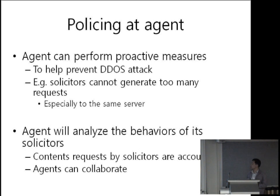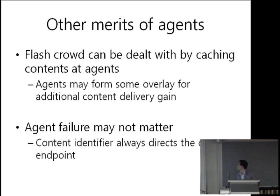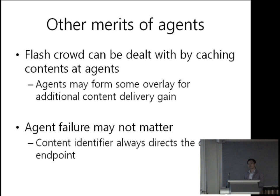Agents can also analyze the behaviors of solicitors much more easily, because end hosts or solicitors always specify the content identifier — so content requests are accountable. Agents can also collaborate if a DDoS attack is happening at a wide-area scale. There can be other merits of agents, like cache-and-forward networks — the agent can cache the content, so flash crowd phenomena can be easily handled. Additionally, agents can form a kind of overlay; even if the corresponding agent does not hold the content, it can ask other agents to relay it.